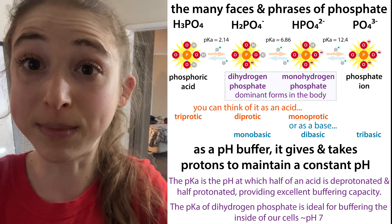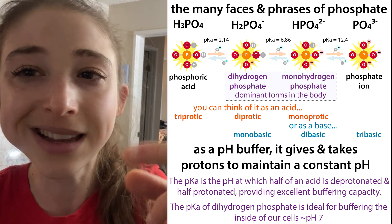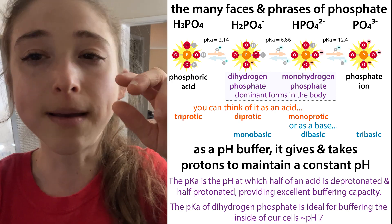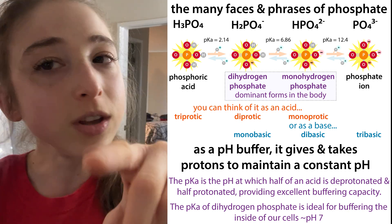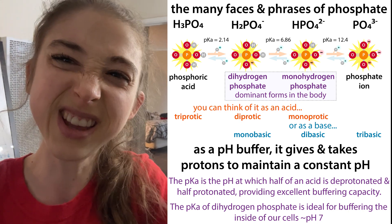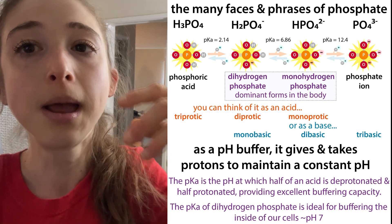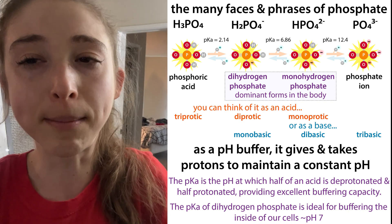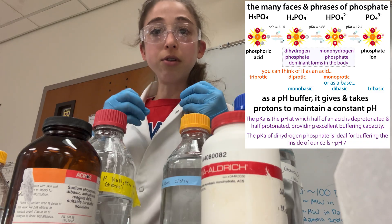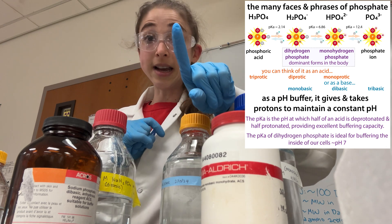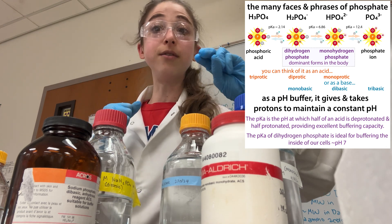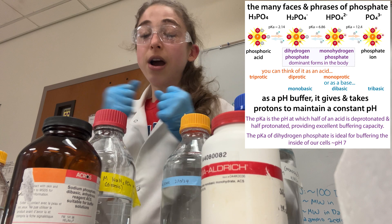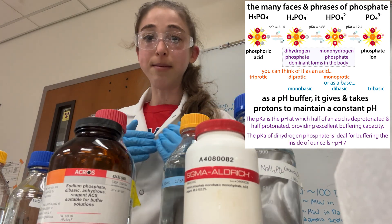In the range that we care about, you're going to have one counter ion in the case of your monobasic — which is the same as diprotic — and then two counter ions in the case of your dibasic — which is the same as monoprotic. Remember, every site acting as a base needs a counter ion to counteract that negative charge, because a salt is a neutral combination of negative and positive.